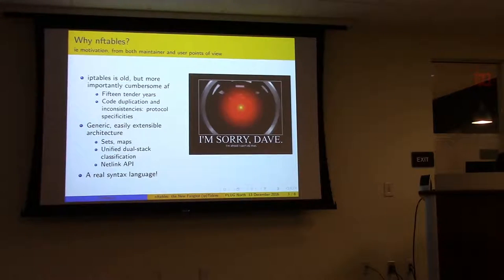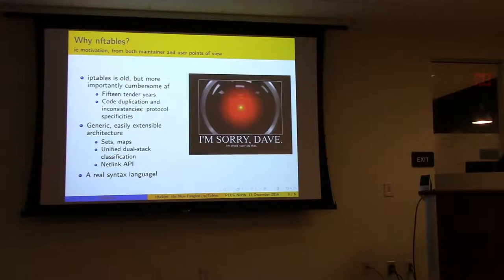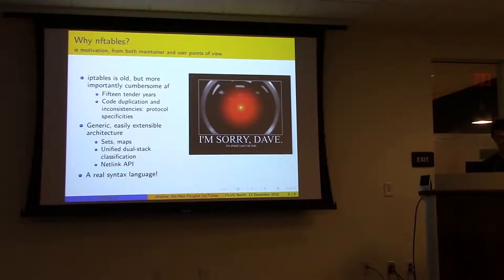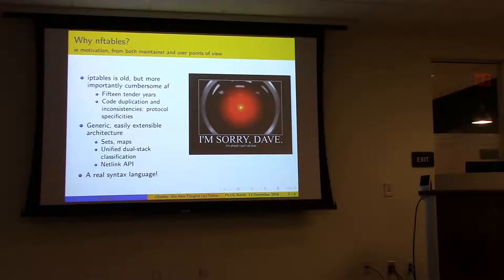Before, with iptables, you had to have one set of rules for IPv4 and another set for IPv6, and there was no obvious way to synchronize the rules unless you wrote scripts. NFTables also provides a netlink API.